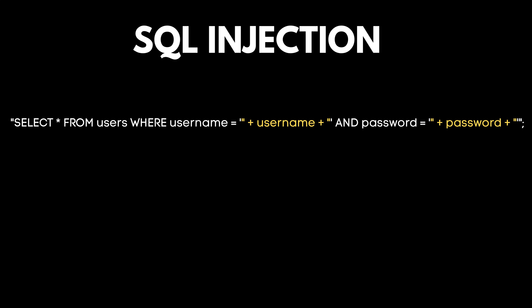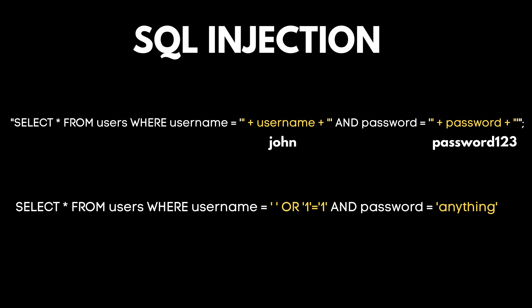Now let's talk about one of the most classic and devastating attacks: SQL injection. Imagine a login endpoint that takes a username and password and builds a SQL query like this. This seems fine if the user enters 'John' and 'password123'. But look what happens if an attacker enters something else as the username — the query becomes manipulated and the attacker is logged in as the first user in the database, because '1 equals 1' is always true. They've picked the lock.